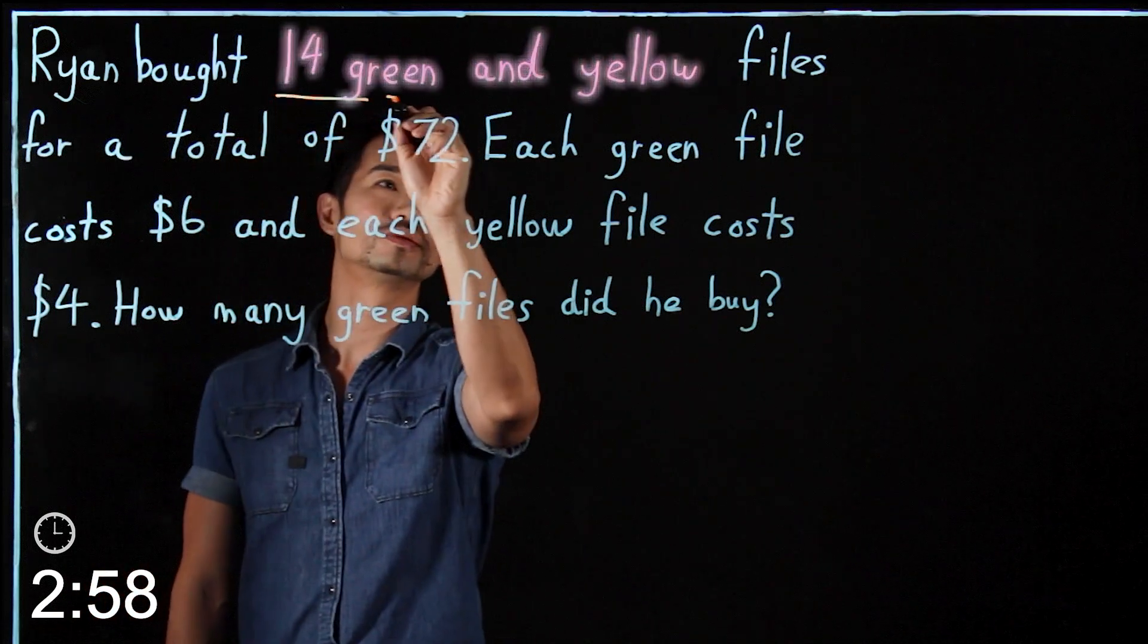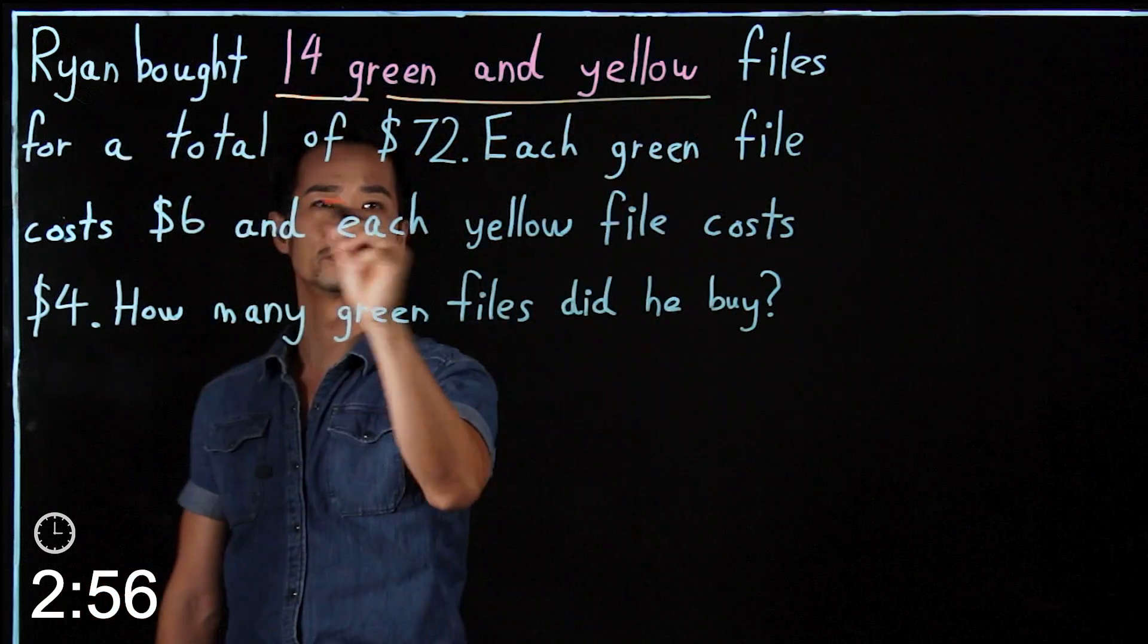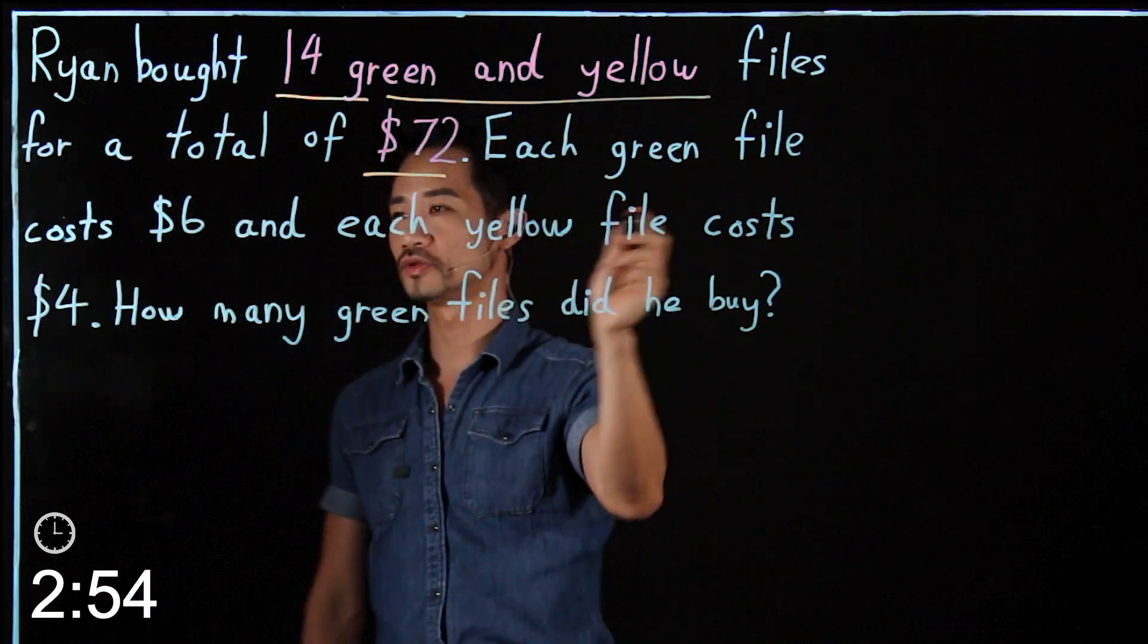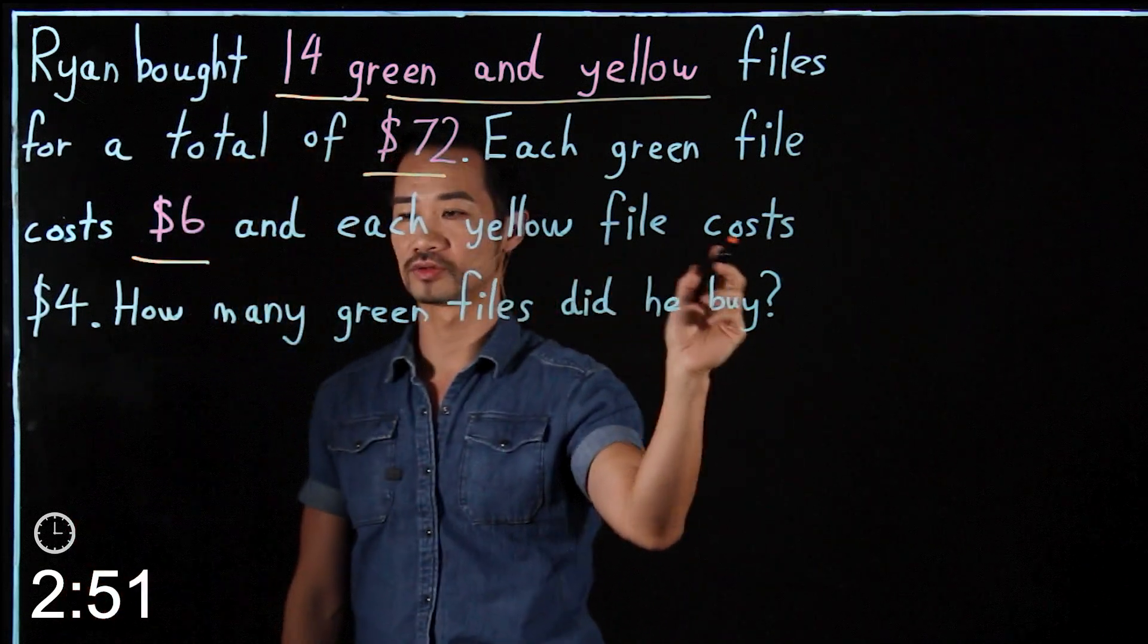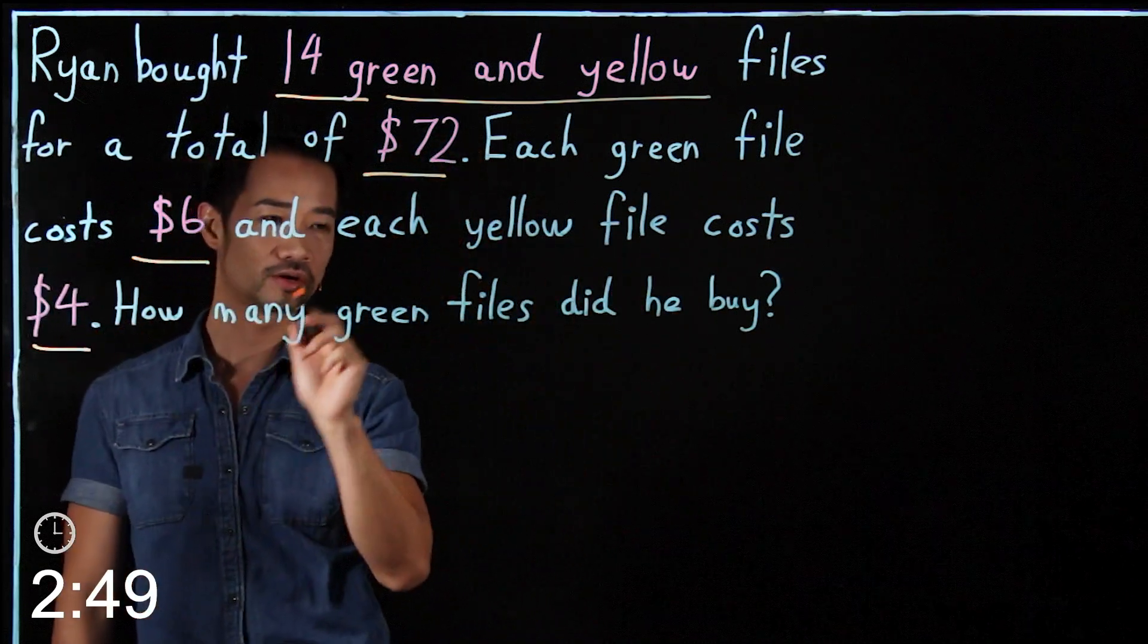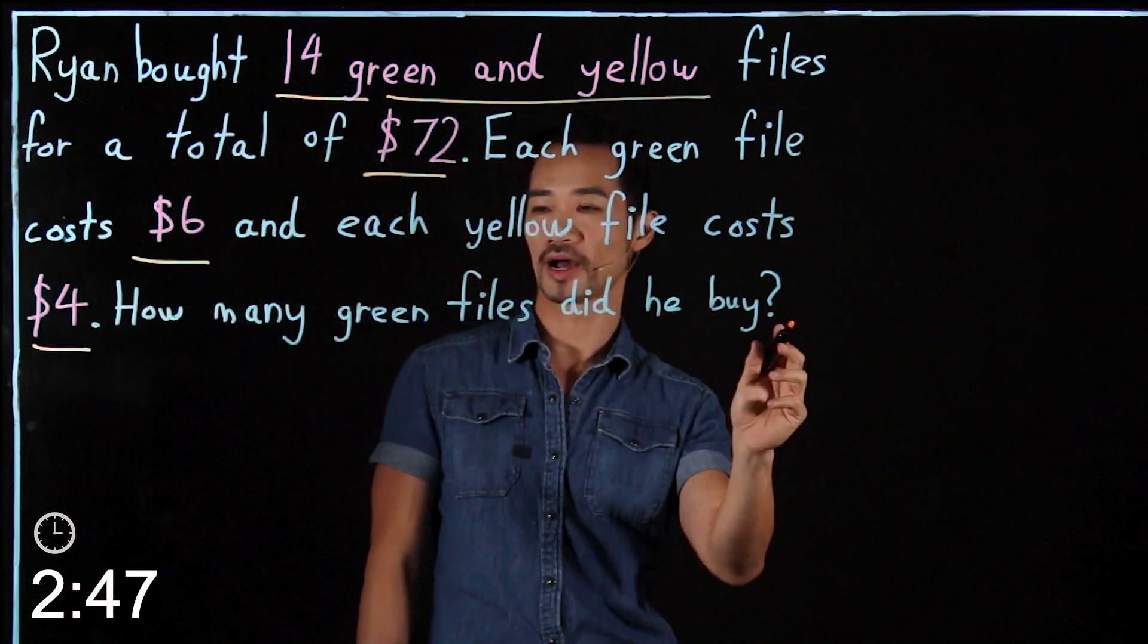Ryan bought 14 green and yellow files for a total of $72. Each green file cost $6, yellow file cost $4. How many green files did he buy?